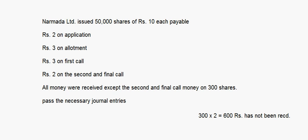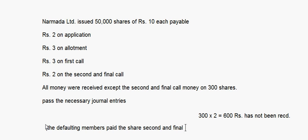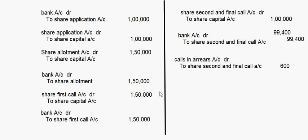In this question, there is no mention of future receipt of the amount. But supposing the defaulting members paid the second and final call after 2 months — then you would write bank account debit, to calls in arrears account: 600 rupees, on that date. There is no mention of interest here, so nothing will come regarding interest. If the question had given an interest rate, you would calculate and record it accordingly.